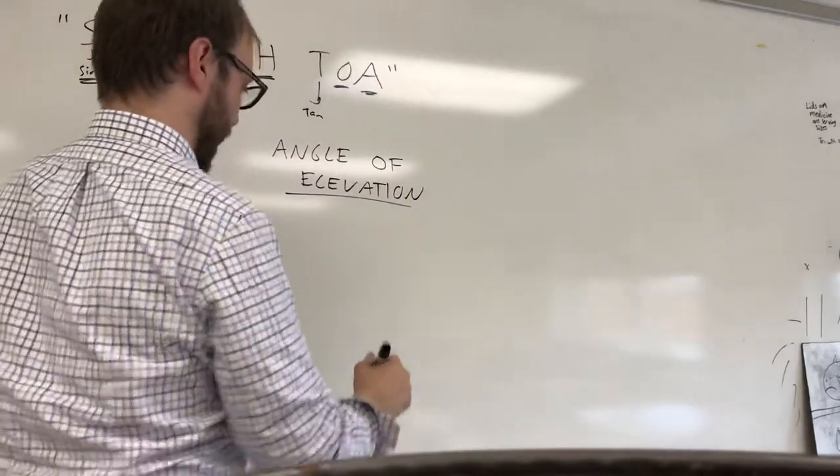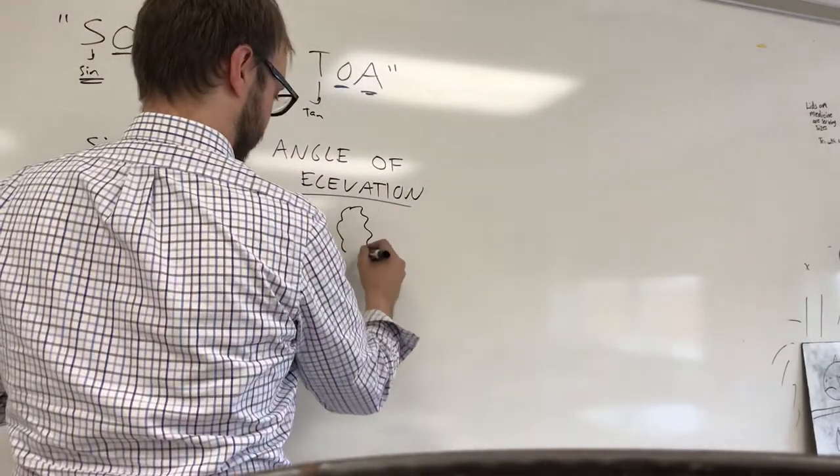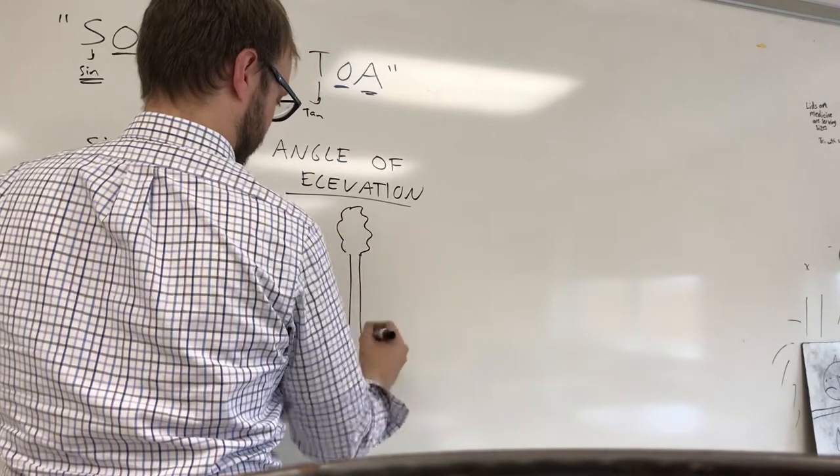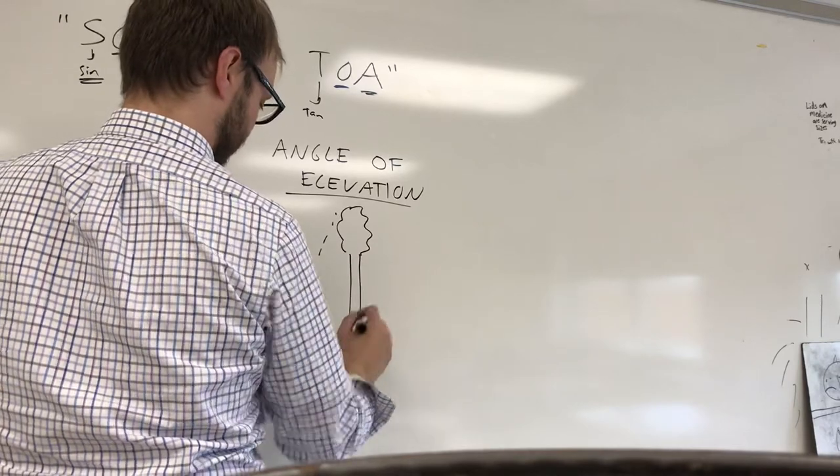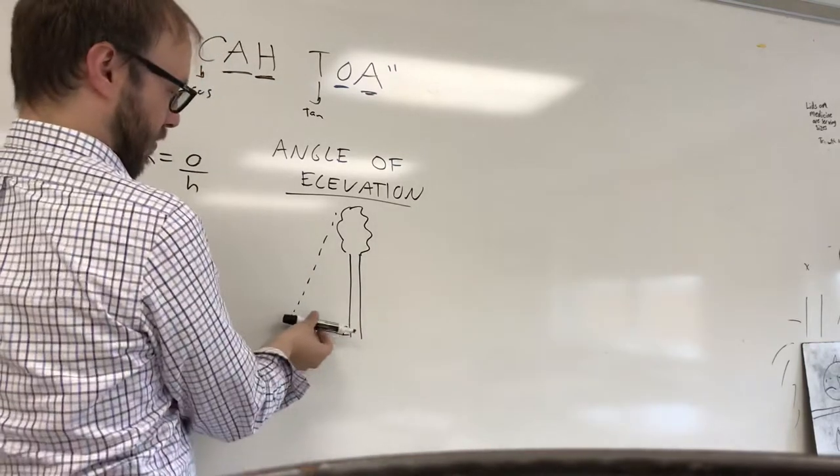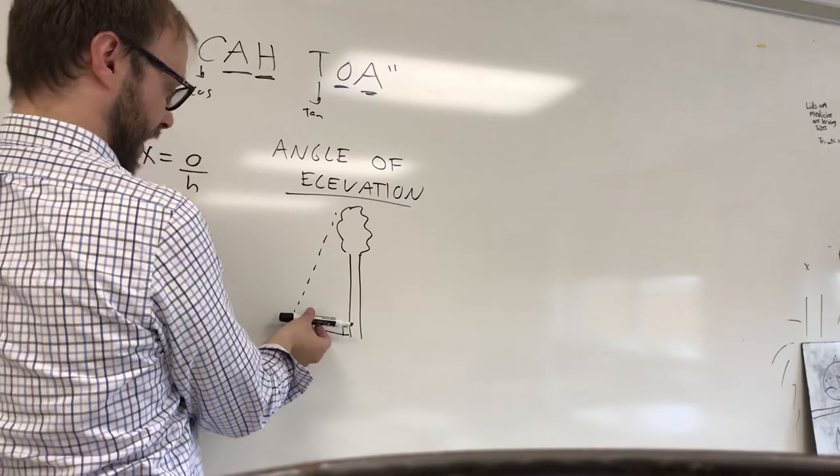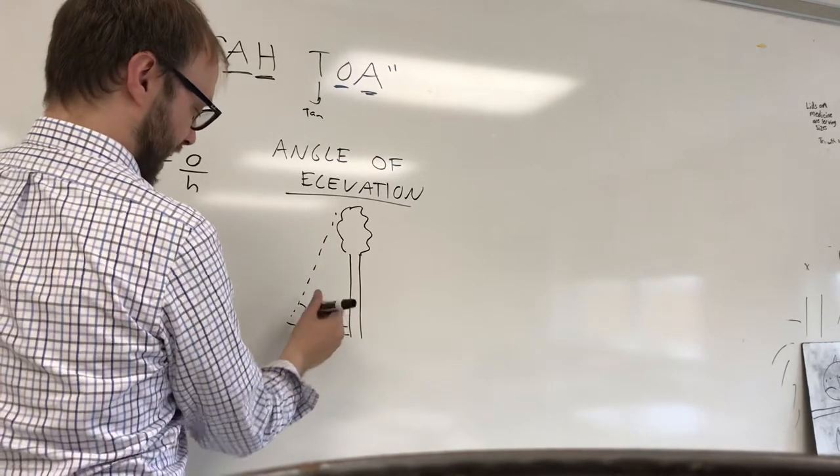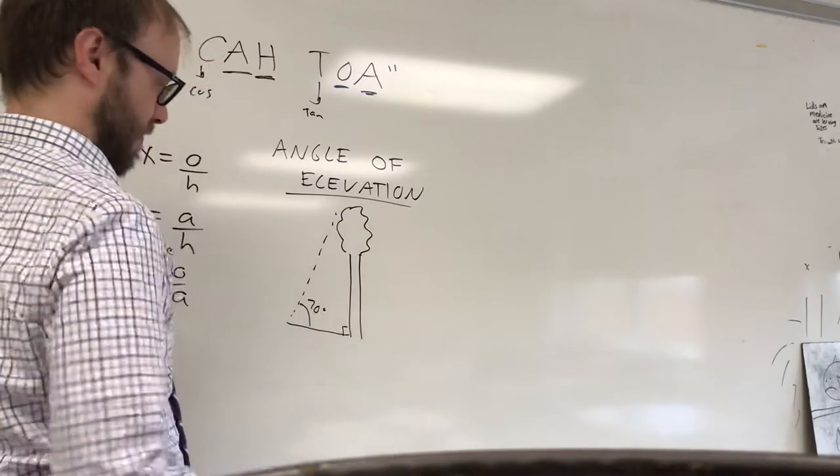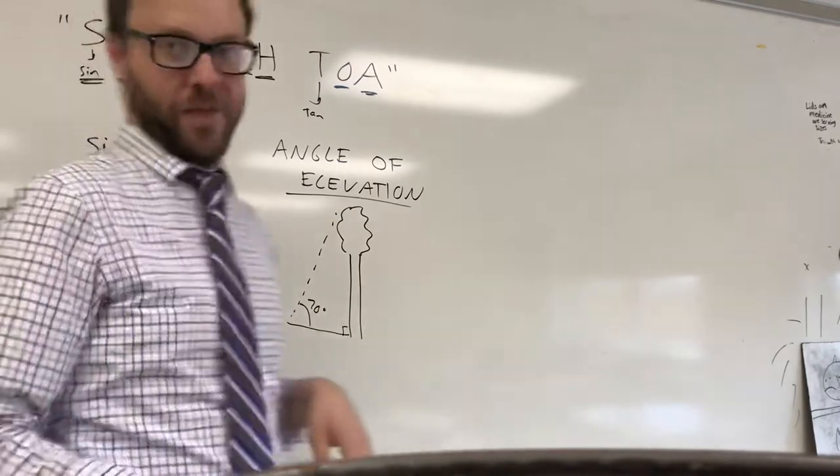If you remember, we did the problem where my dad was doing some measuring of a tree. He was on the ground and he looked up at the tree. Basically, if he was staring at the tree, he'd be looking this way. He tilts his head upwards. This is the angle of elevation, the angle that you look up at the top of something.